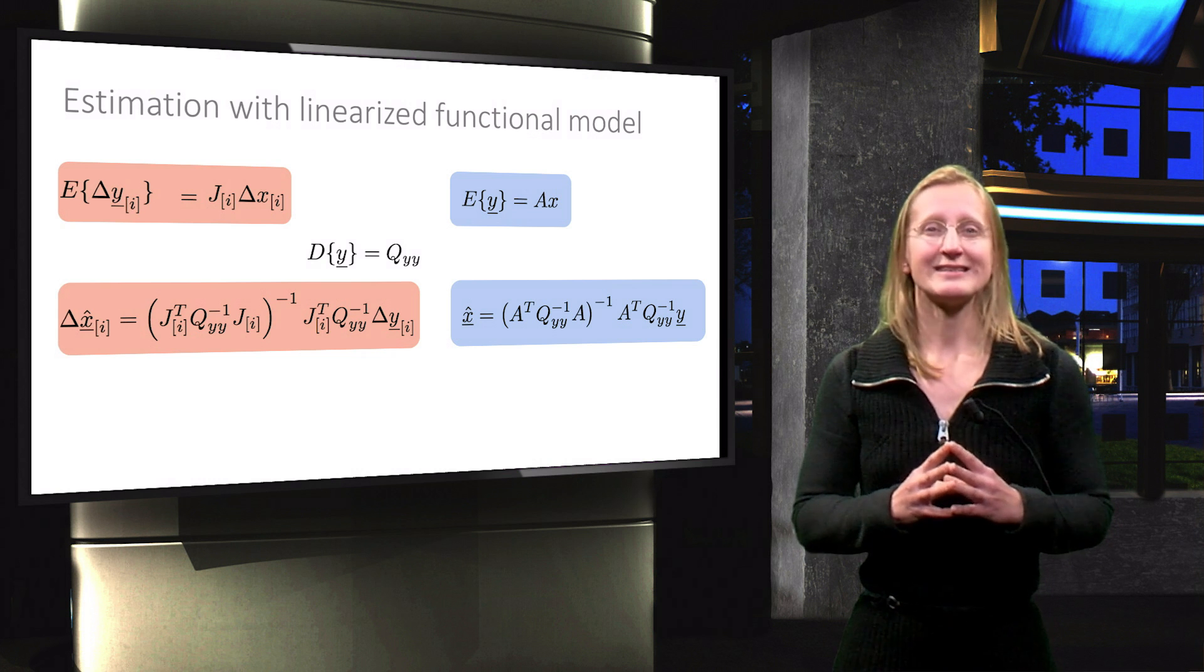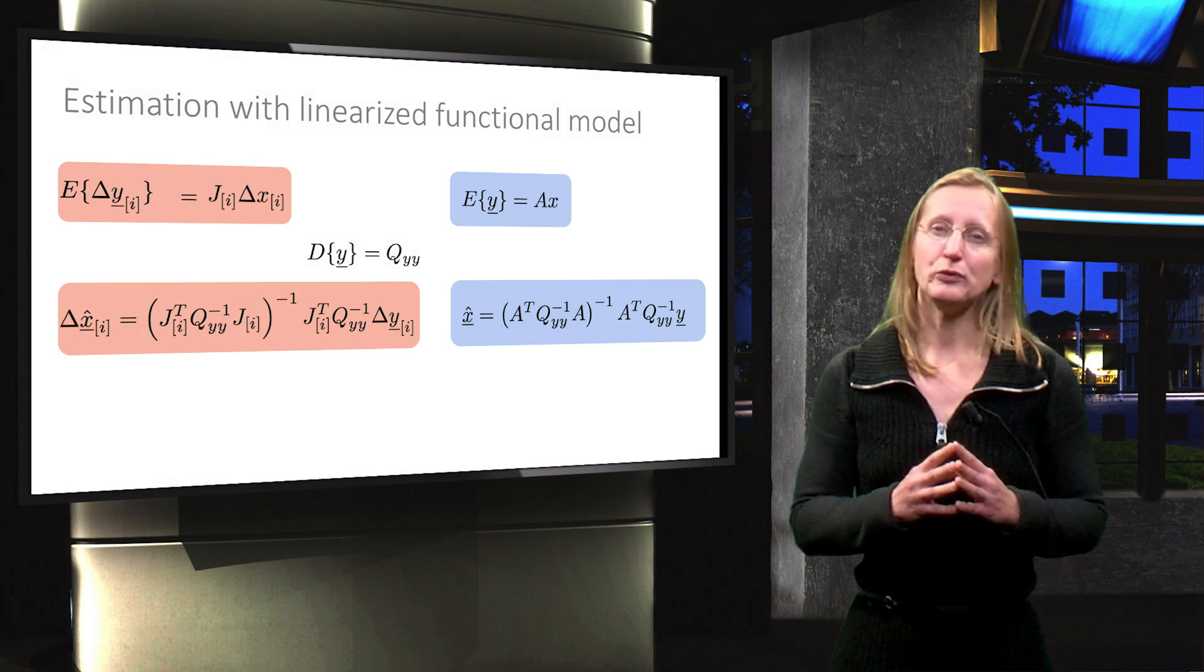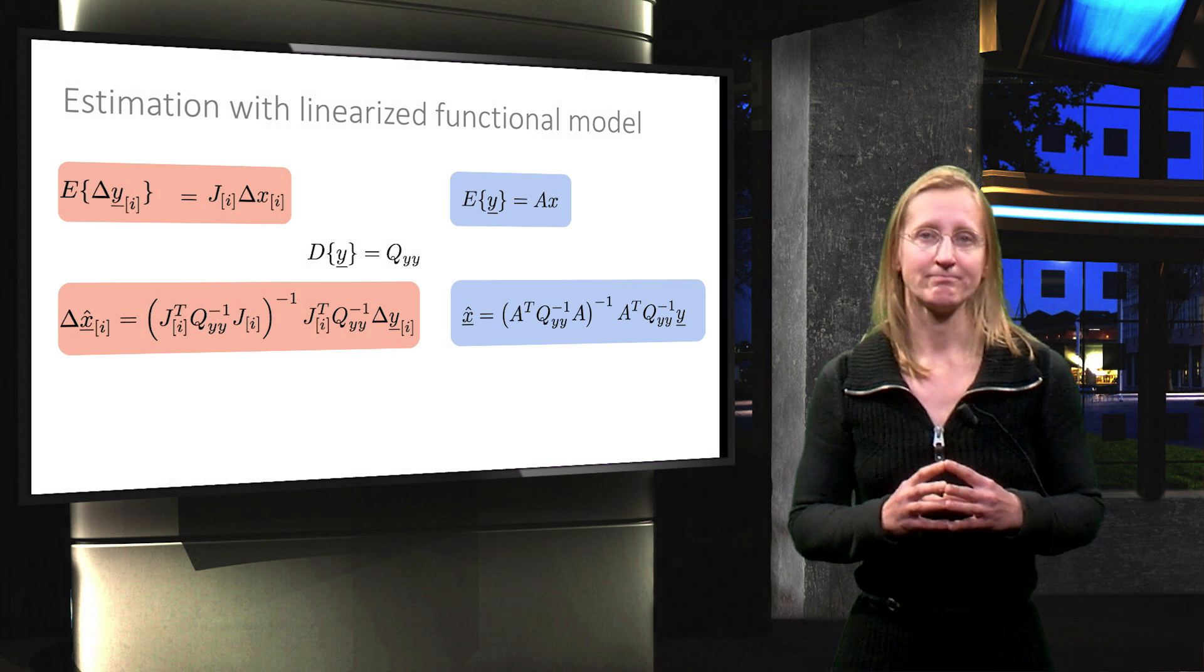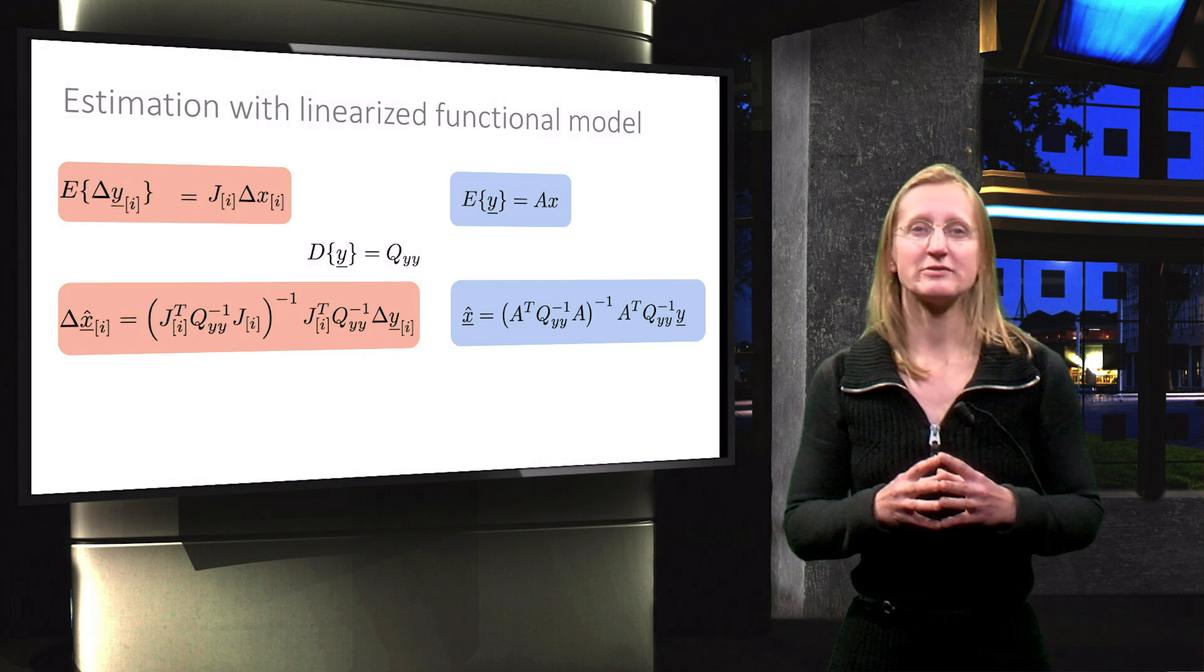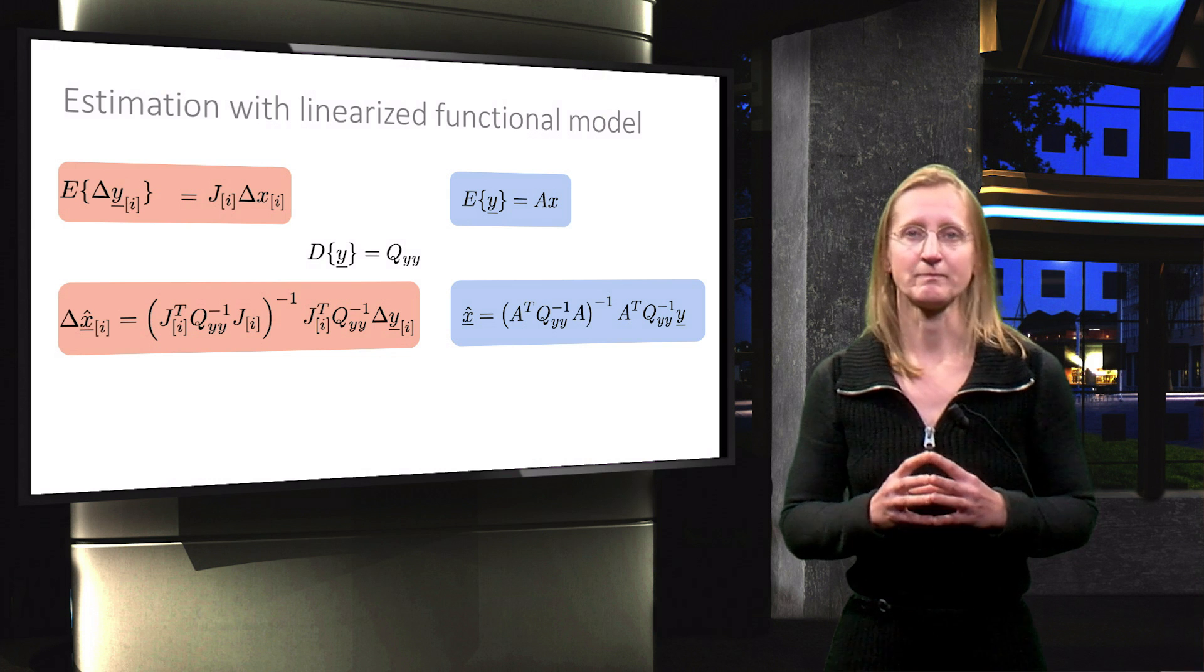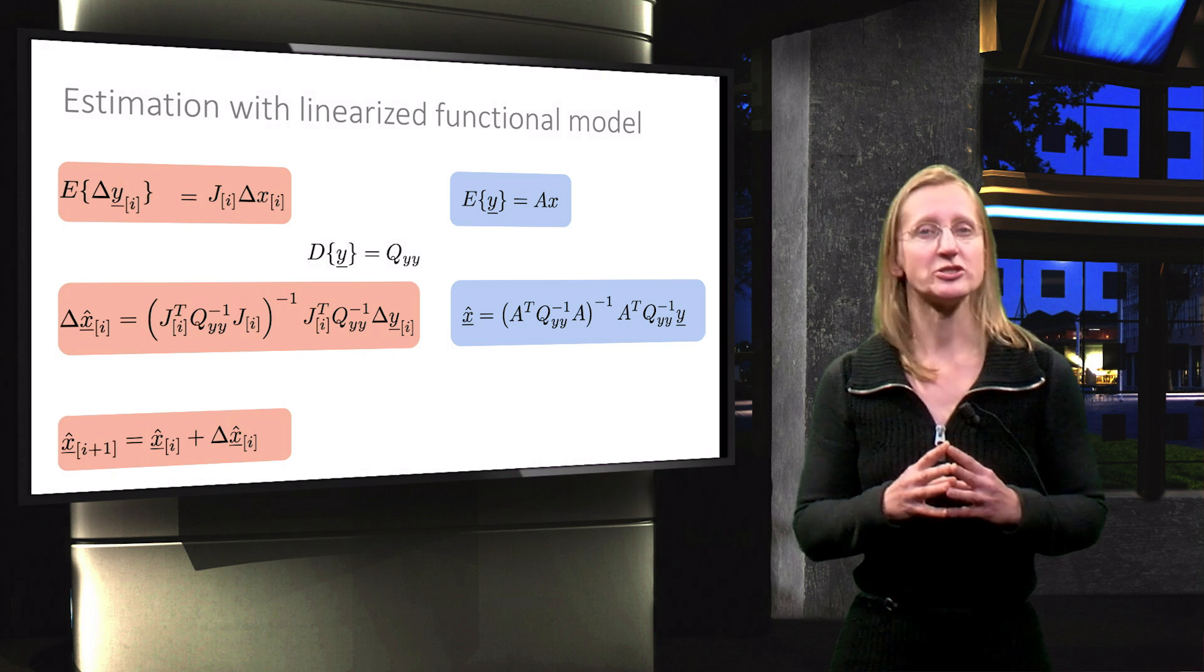Since we are now estimating the delta x using BLUE, we also use the notation with the hat. Having estimated delta x allows to calculate a new estimate of the unknown parameters x, for this specific iteration.